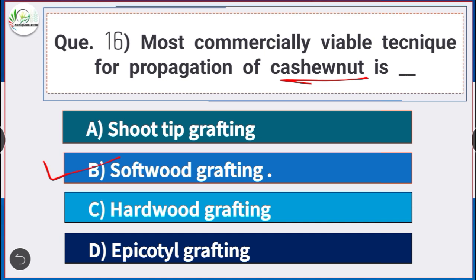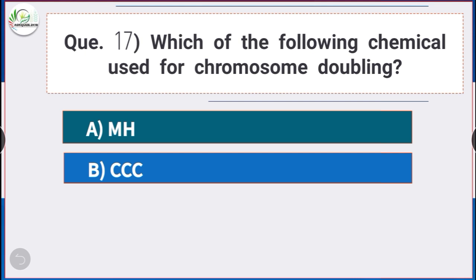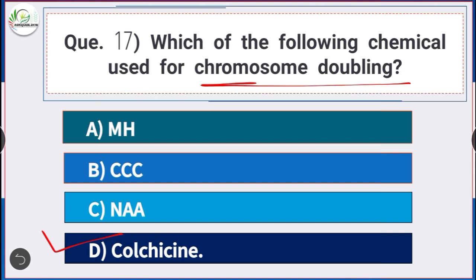Question number 17: Which of the following chemicals is used for chromosome doubling? Answer is option D — colchicine. The chemical used for chromosome doubling is colchicine.